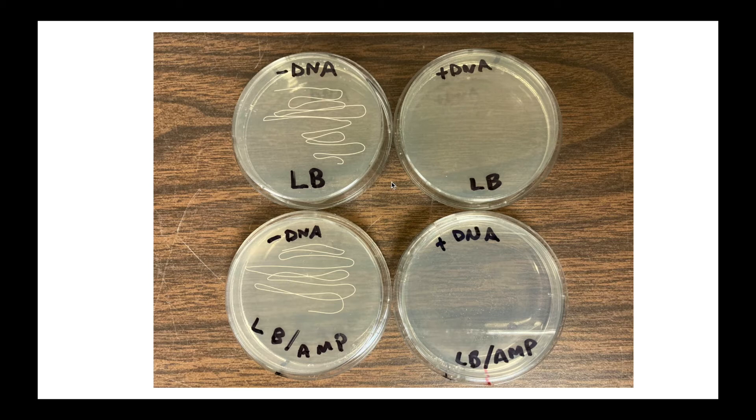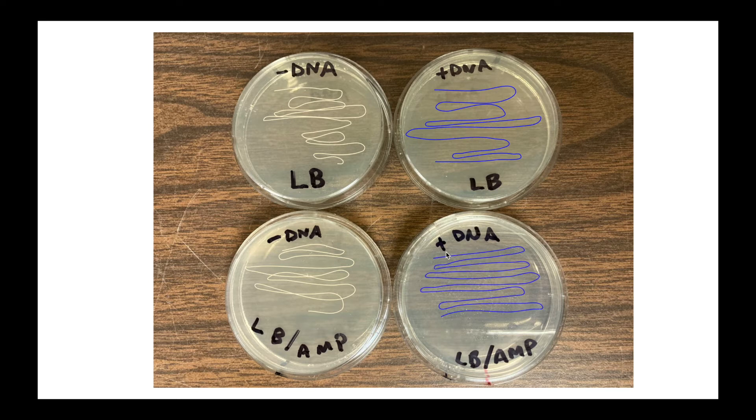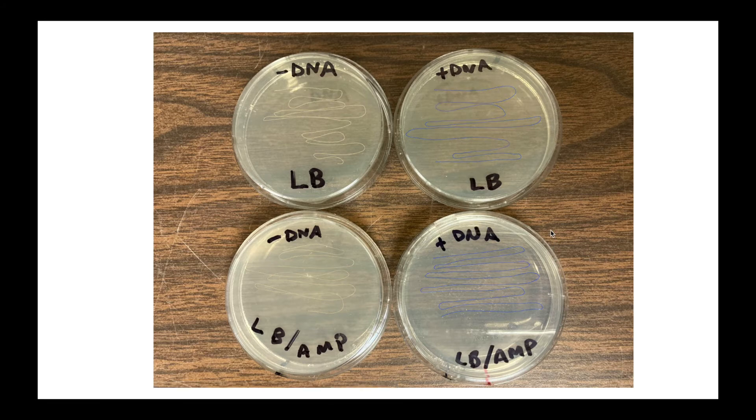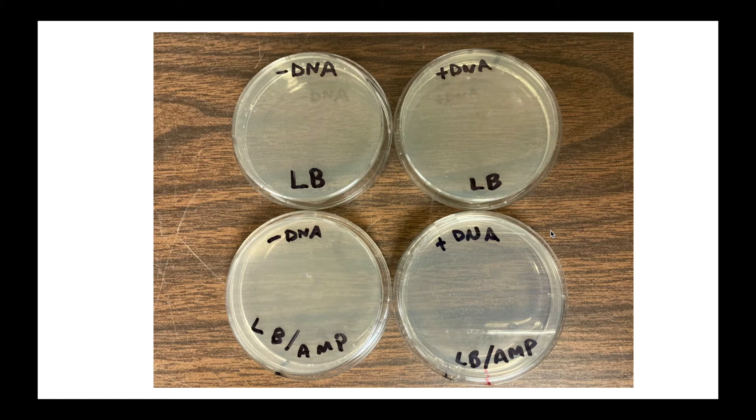On these plates over here, we'll plate the bacteria that did receive the plasmid DNA. So we call that the plus DNA plate. And we use the same bacteria that received the plasmid DNA onto this plate here. Now remember, these two plates are different because one has LB, one has LB but also ampicillin.